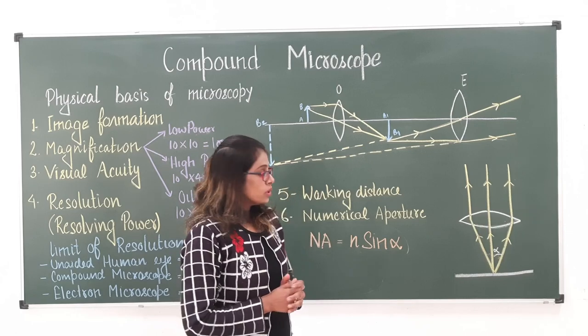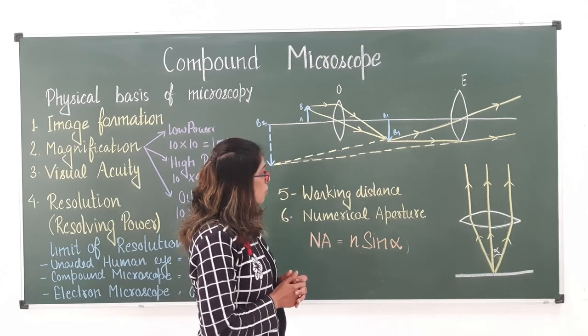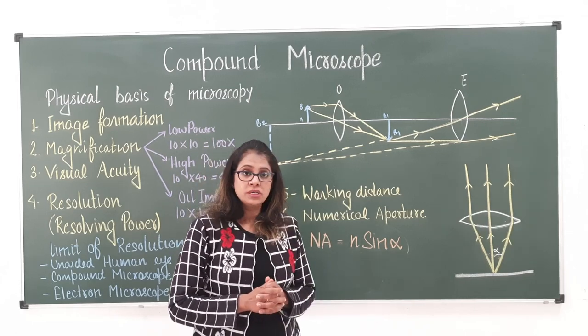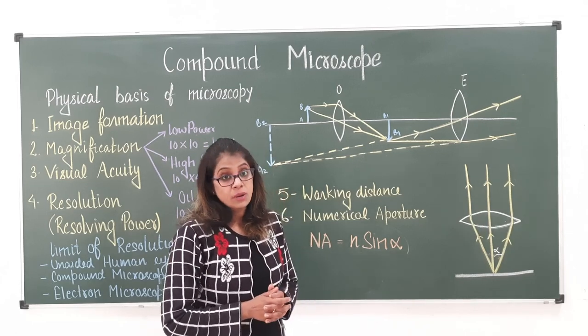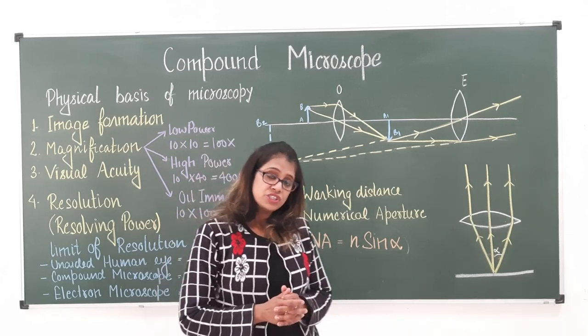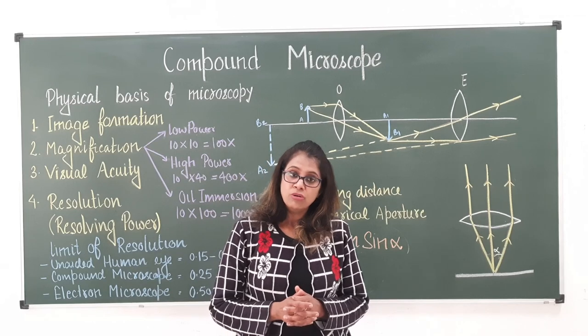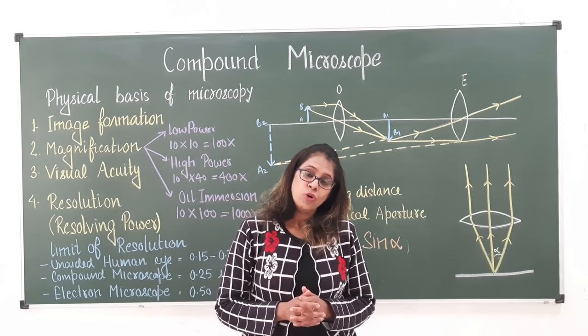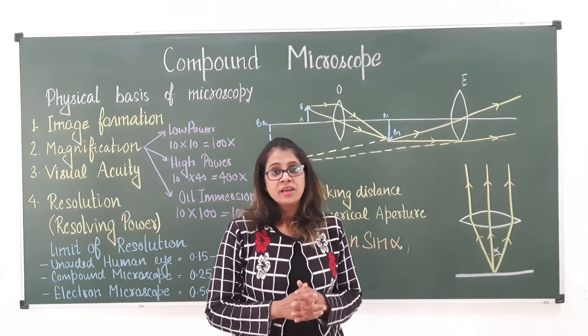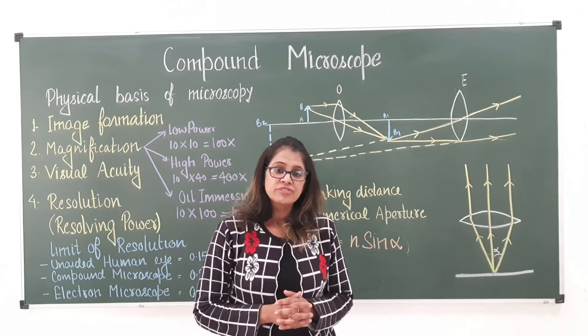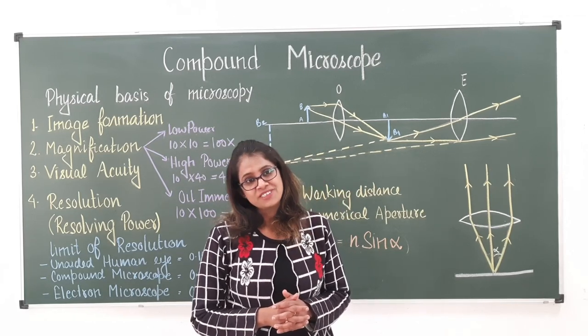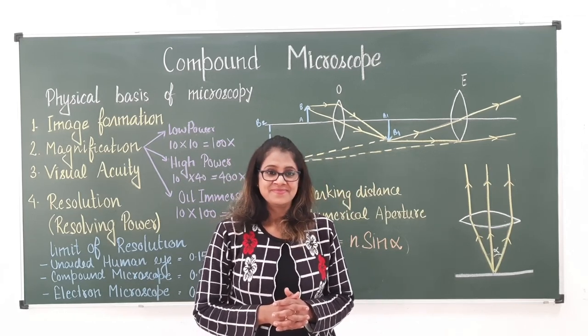In the case of the oil immersion lens, the working distance decreases further but the value of n increases, so the numerical aperture is highest for the oil immersion lens. This concludes the discussion on the compound microscope structure and mechanism of image formation.